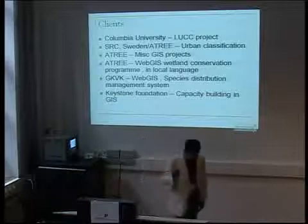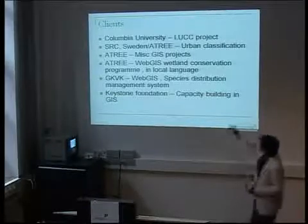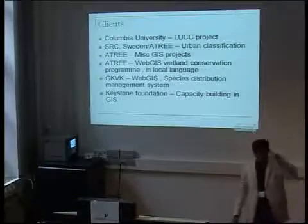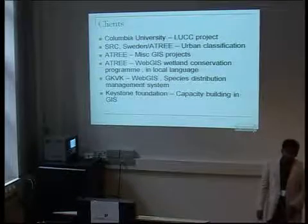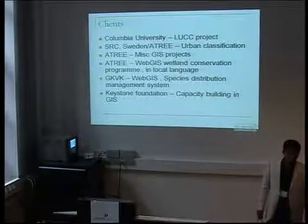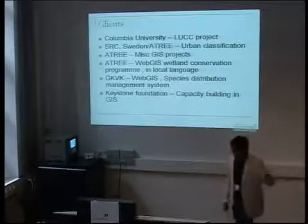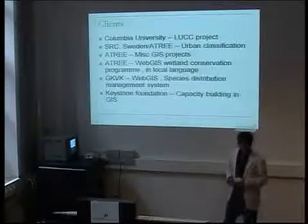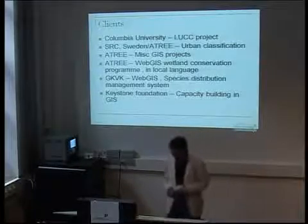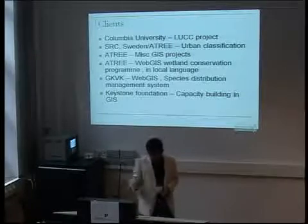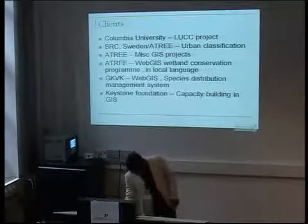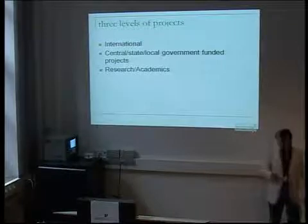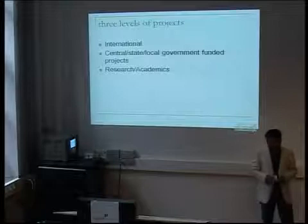Two important web GIS projects we are dealing with right now: first, developing a web GIS for a wetland conservation program — a highlight is that we are using open source and OGC specifications, and we are trying to develop it in the local language Malayalam, so the search panel, the map, everything will be in Malayalam, with PostgreSQL as the backend. Second, a Species Distribution Management System for GKVK, the Agricultural University in Bangalore — the first phase is already implemented. We also continuously provide consultancy to the Keystone Foundation. These projects come from contacts I gathered during my three years of experience in different NGOs.